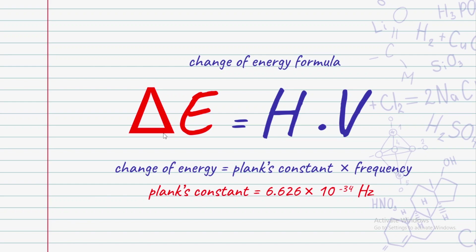We have the change of energy. From that we can find frequency. We rearrange: frequency equals change of energy over Planck's constant. Planck's constant is 6.626 times 10 raised to minus 34.